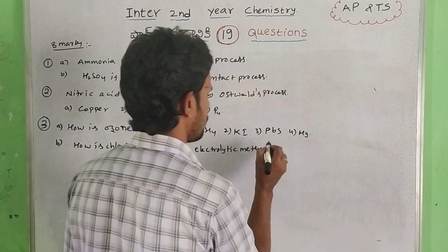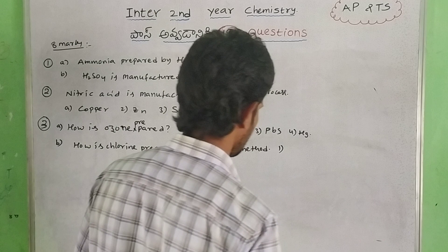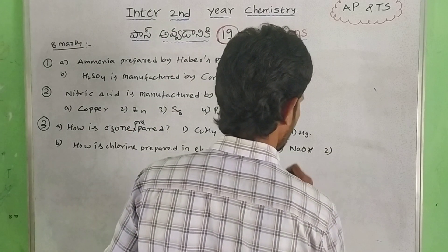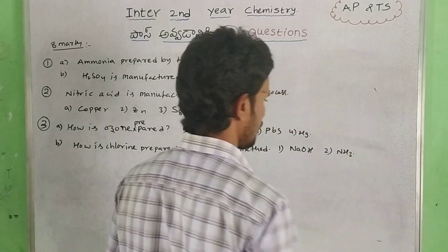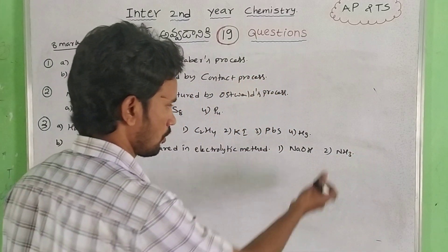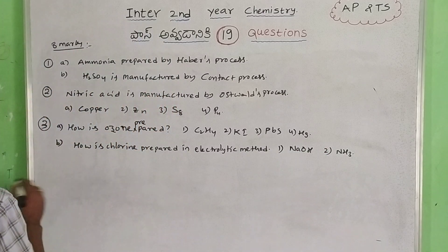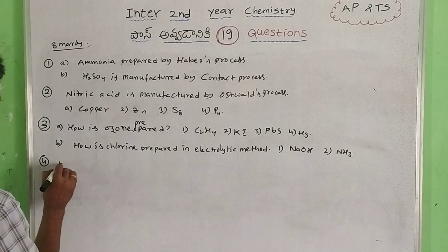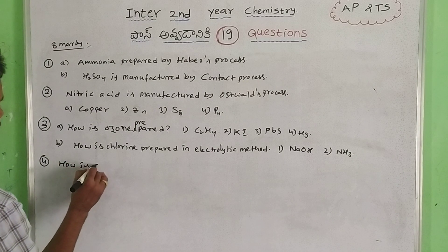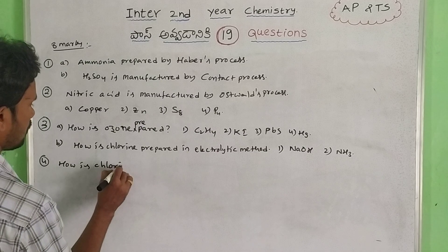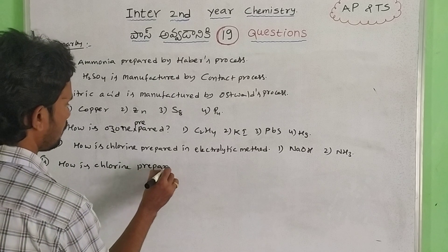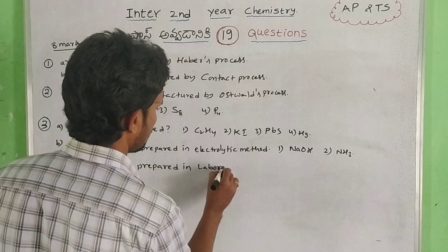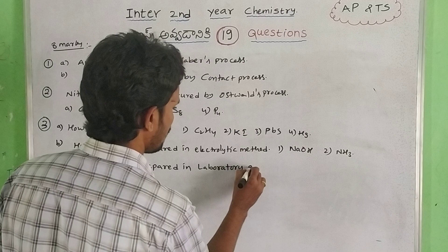Electrolytic method. In the properties section: first one — NaOH, cold and hot conditions. Then ammonia under different conditions — excess of ammonia and excess of chlorine.